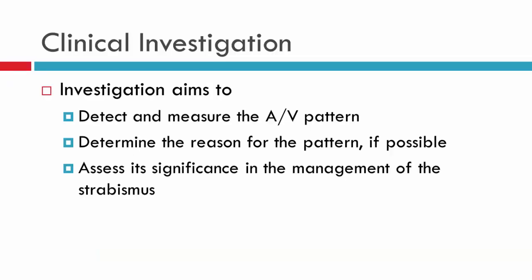When we're performing an oculomotility assessment on a patient, what we want to do is detect and measure any alphabet patterns present — here I have AV patterns as these are the most common, but it could be any alphabet pattern. We also want to see if we can find a possible reason for the pattern if possible. We haven't talked about etiology of AV patterns; this is in the next video. Finally, we want to determine whether the pattern needs to be clinically managed, which relates to surgical management of alphabet patterns.